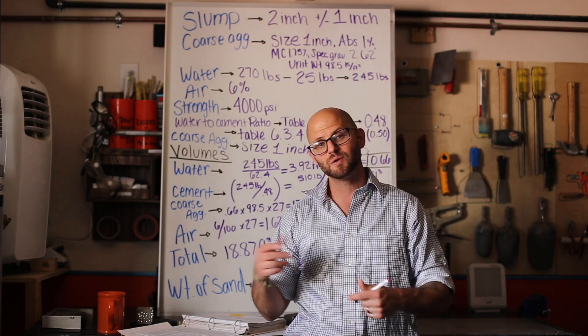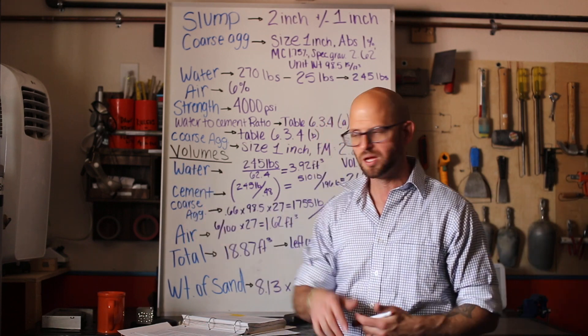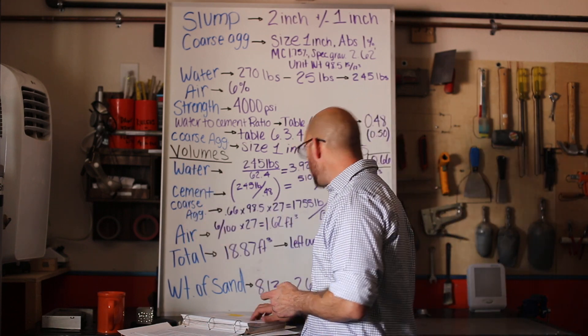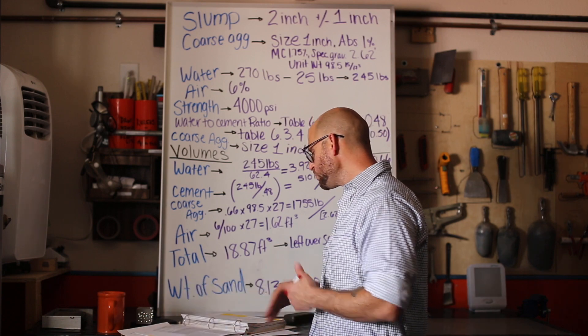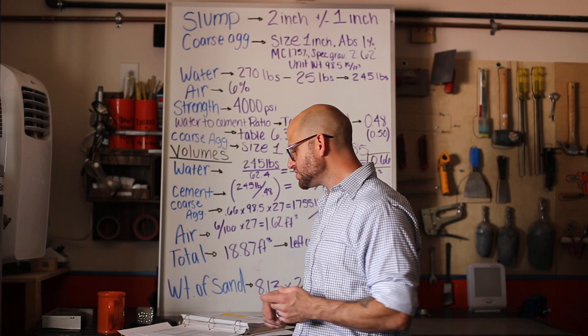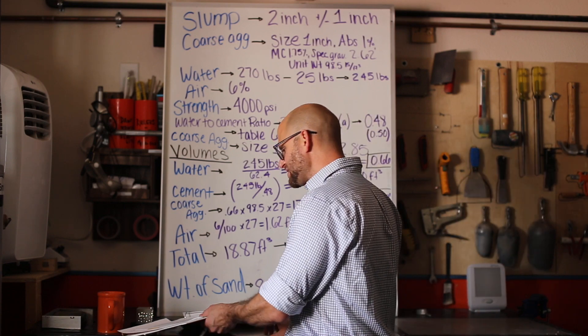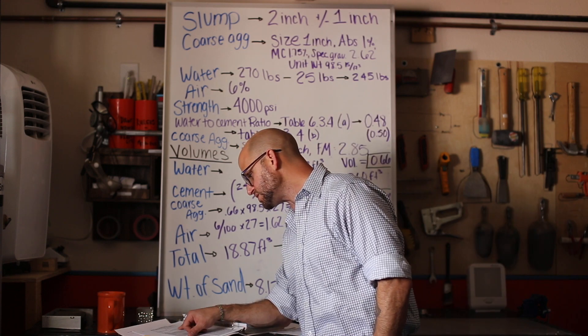We write that down so our slump is going to be two inches plus or minus one inch. Normally the way I design, I go for the maximum, so a three inch slump. When I worked in the field placing slabs, I would want as high of a slump as I could tolerate. From there we go to our second table.